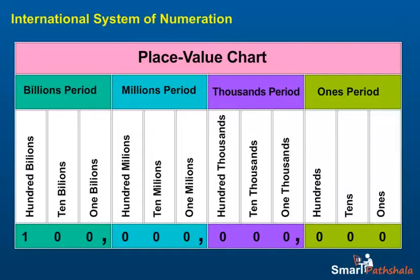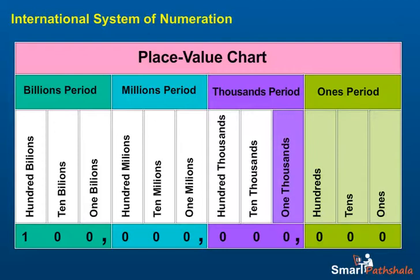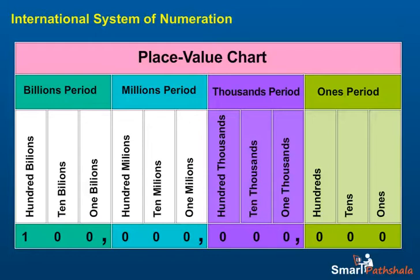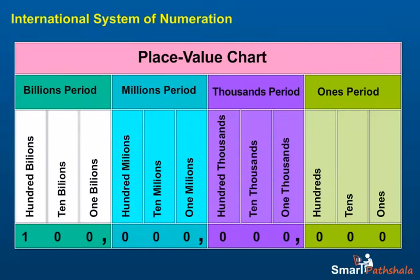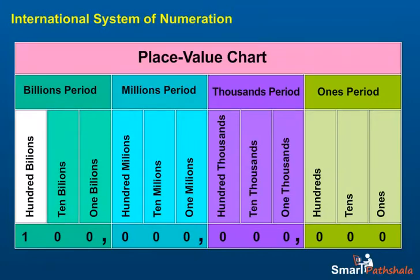The ones period contains the ones, tens, and hundreds place. The thousands period contains the thousands, ten thousands, and hundred thousands place. The millions period contains the million, ten million, and hundred million place. The billions period has the billion, ten billion, and hundred billion place.